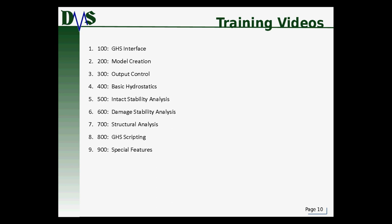Here's what we're going to cover in all these training sessions. We'll start with the 100 area, which is all about the GHS interface and how you actually interact with the program. Then we'll get into model creation — how do you actually create ships in GHS — followed by output control dealing with formatting. Then we'll cover basic hydrostatics, intact stability analysis, damage stability analysis, and structural analysis, mainly longitudinal strength. Finally, we'll combine all of those into GHS scripting for automation, and cover a few extra special features. The idea is to start at the most basic and build up the skills needed for all common naval architecture analyses.